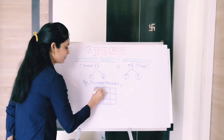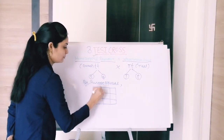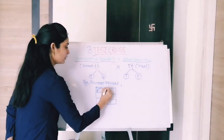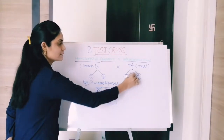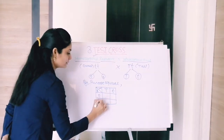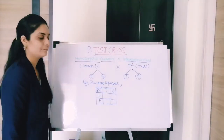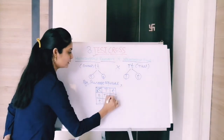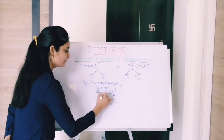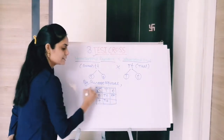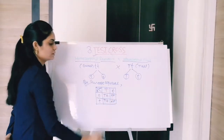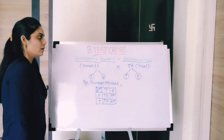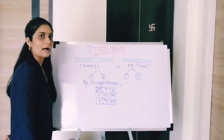In the Punnett square, one is capital T and one is small t on one axis, and both small t gametes on the other. The results are: capital T small t, small t small t, capital T small t, and small t small t.